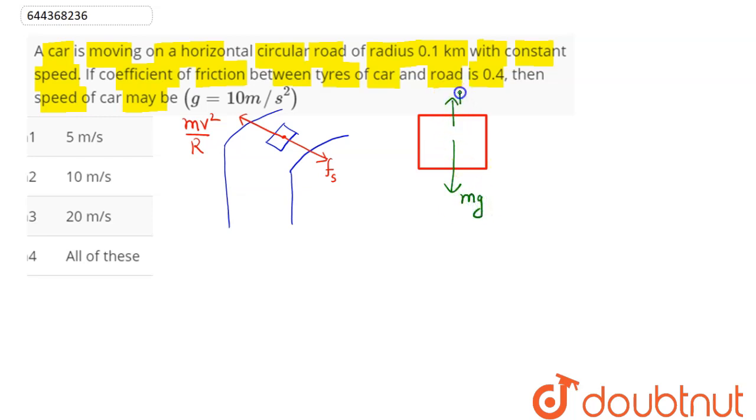normal here will be acting in upward direction. Hence, normal equals mg, and friction here is equal to mv² by r. So friction is given as μN, which is equal to mv² divided by r. Now